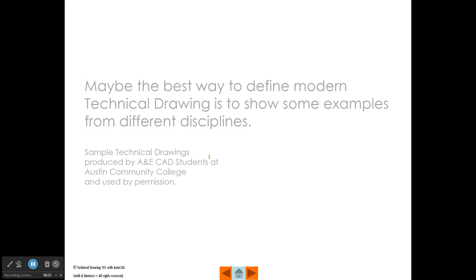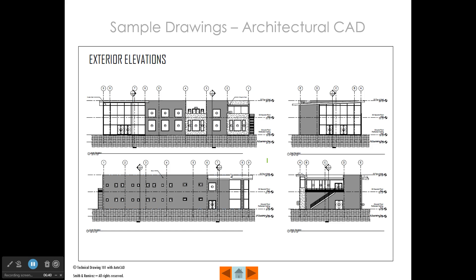Maybe the best way to define modern technical drawings is to show some examples from the different disciplines. This is an example of an architectural drawing done using Revit. These are called elevations, and you could think of this as the front, the right, the back, and the side view of this building.